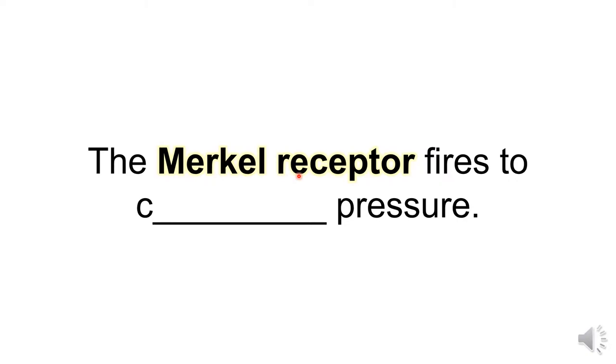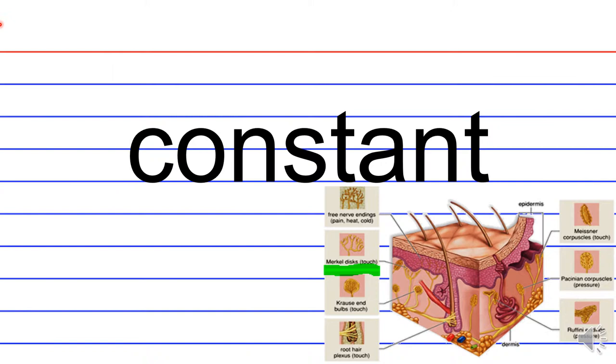The Merkle receptor fires to c-blank pressure. I think by now you should know the answer but I'll give you a moment to think. Again that's constant. And here goes an image of Merkle receptors. They're also known as Merkle discs.